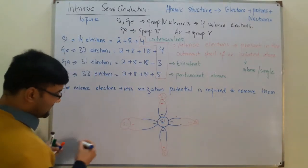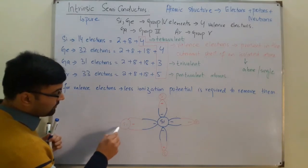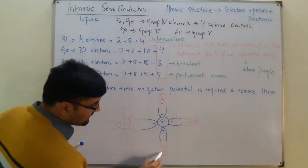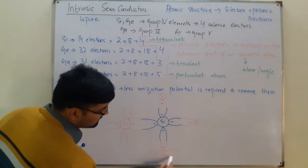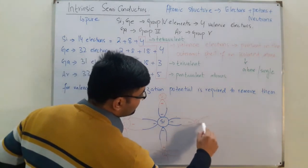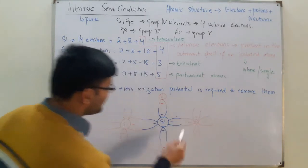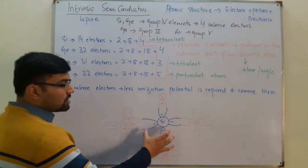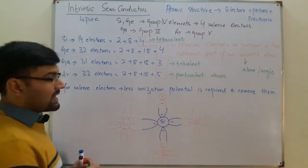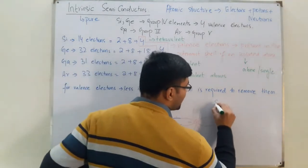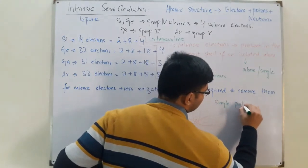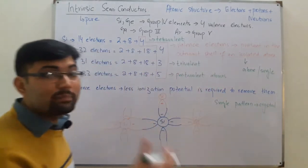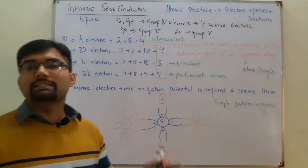Similarly for each silicon atom: it has its own four electrons, and this pattern will repeat. The single pattern is called a crystal. When this pattern repeats, it is called a crystal lattice.